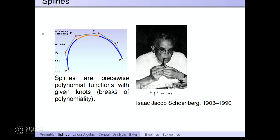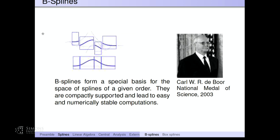Among other things, Schoenberg is responsible for the creation of splines. Here is a spline curve drawn in 2D — splines are just piecewise polynomial functions. You might be interested to know that splines are actually the workhorse of numerical computation, or they have been until recently. I know Boeing still uses them on an everyday basis. Carl de Boor, one of my informal mentors in Wisconsin, was awarded the National Medal of Science primarily for his work on splines. In particular, he developed the theory of so-called B-splines, which are just special bases of univariate splines. They turned out to be incredibly useful and numerically stable, leading to a whole host of computational advantages and numerical methods.